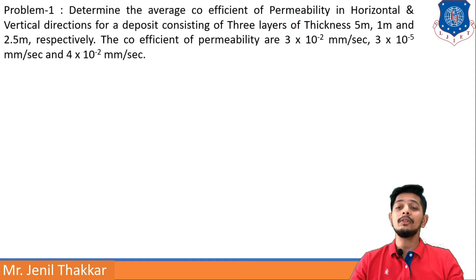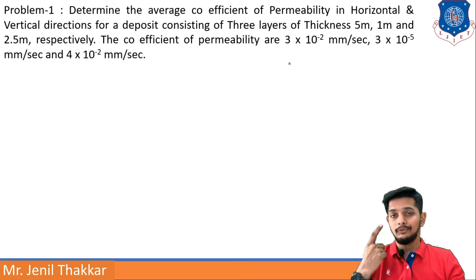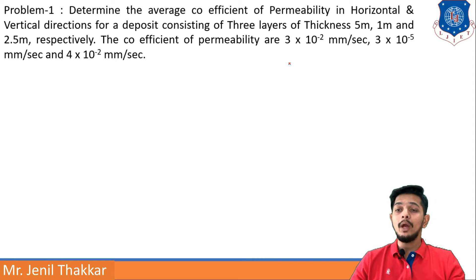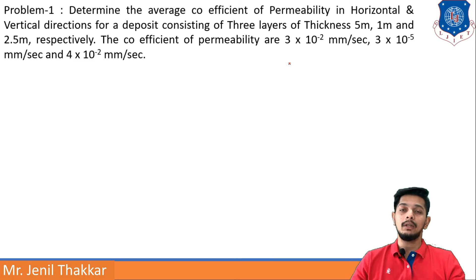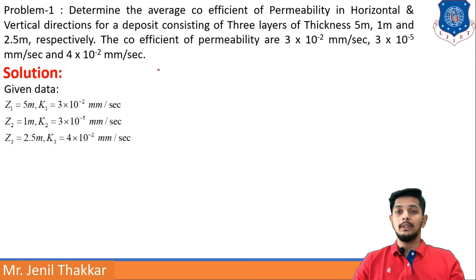Determine the average coefficient of permeability in horizontal and vertical directions for a deposit consisting of three layers of thickness 5 meter, 1 meter, and 2.5 meter respectively. The coefficients of permeability are 3×10⁻² mm/s, 3×10⁻⁵ mm/s, and 4×10⁻² mm/s.